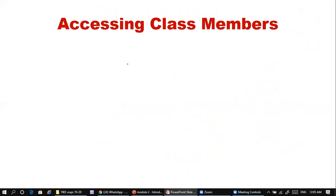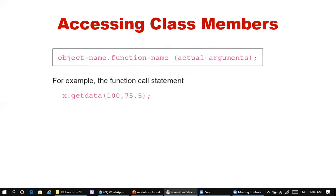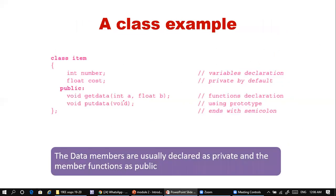Now, how to access class members: we access through member functions only, since data members are generally private. The syntax is: object_name.function_name(arguments). For example, 'x.get_data(100, 299.95)' — x has access to get_data, which takes an integer and a float argument. A member function can be invoked only through an object.